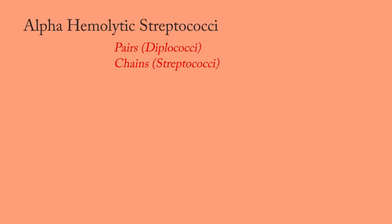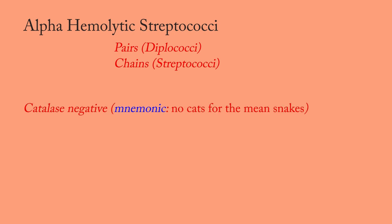Alpha hemolytic streptococci are found in pairs or long chains. These pathogens are catalase negative. To help you remember this metabolic property, we will depict these pathogens as snakes. Snakes bite cats, so catalase is negative, and spherical chains form snakes called streptococci. Remember catalase negative by: no cats for the mean snakes.